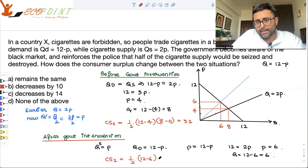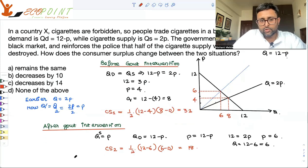So after government intervention, this thing becomes consumer surplus now: 1 by 2 into 12 minus 6 into 6 minus 0. So this thing comes out to be 18. So what is the change in consumer surplus?